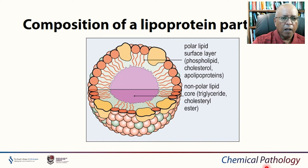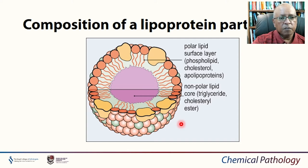Albumin is a principal carrier of fatty acids, whereas other lipids circulate in complex with lipoproteins. The apolipoproteins are a very important component of lipoproteins because they regulate lipoprotein metabolism. They also act as receptor ligands and regulate enzyme activity.